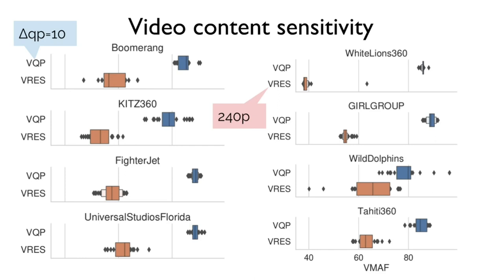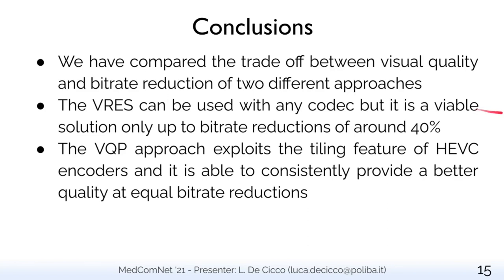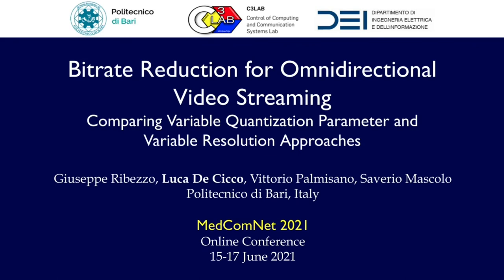To conclude the analysis, we showed how visual quality varies across the whole video catalog, comparing VMAF scores for delta QP equal to 10 and rescaled resolution of 240px. The gap previously observed is consistent for almost all videos, with the only exception of 'Wild Dolphins,' for which the gap is much smaller due to visible artifacts in the VQP approach. In conclusion, the VRES approach can be used with any codec but is viable only up to around 40% bitrate reduction, while the VQP approach — exploiting the tiling feature of HEVC codecs — consistently provides better quality at equal bitrate reductions. Thank you for your attention.